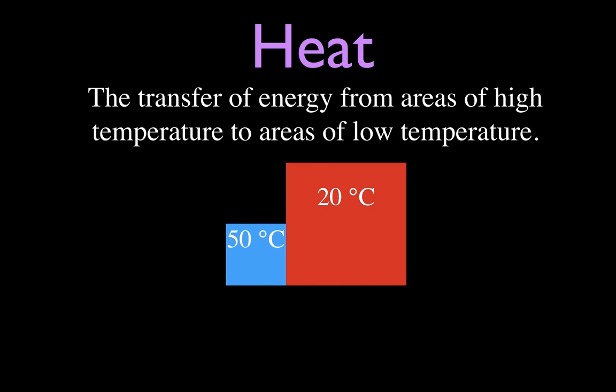Now, for example, here we have two objects. We have the blue object, which is 50 degrees Celsius. We have the red object, which is 20 degrees Celsius. What's going to happen when we put those two objects next to each other? Well, energy is going to transfer over in the form of heat. It's going to transfer from the warmer to the colder.